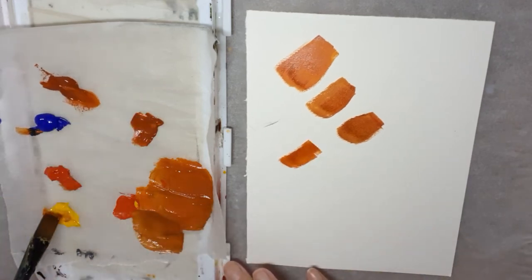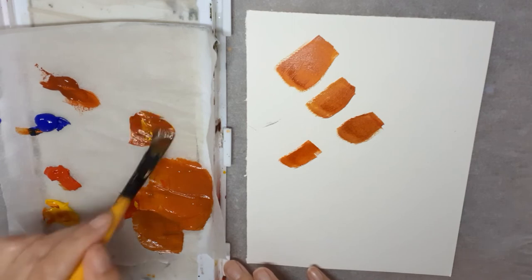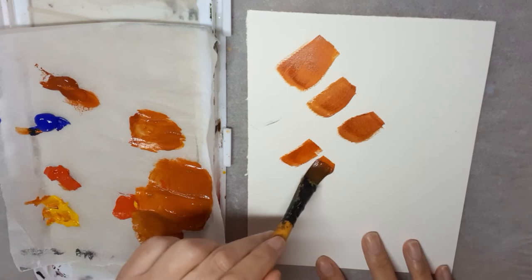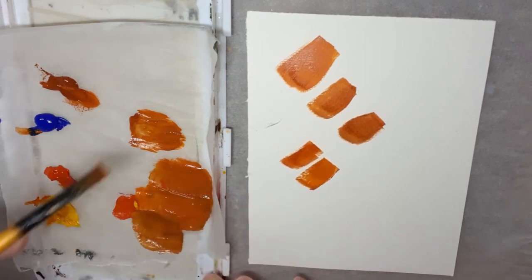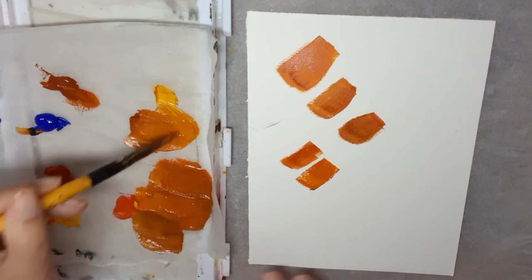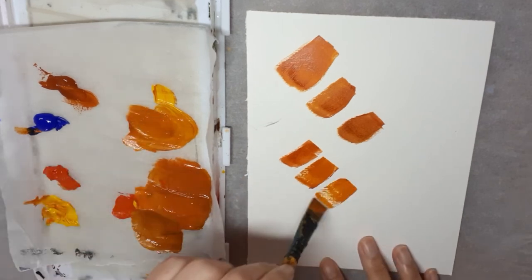If you want to lighten it, just add a tiny bit of yellow. So a lighter terracotta.